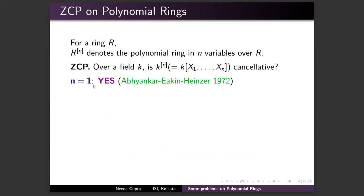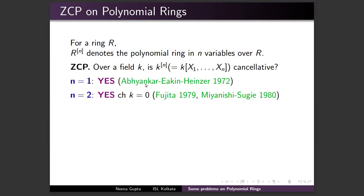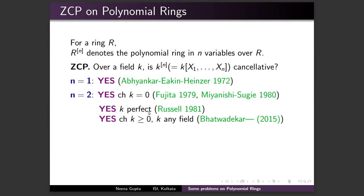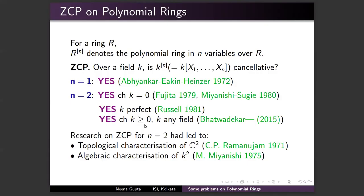This problem is known to have an affirmative answer for n = 1. For n = 2 it was a deep problem, solved by Miyanishi and Sugie with an important contribution by Fujita in characteristic zero, and later for any arbitrary field by Russell and by us together with Professor Bhatwadekar. The research for n = 2 led to beautiful results: a topological characterization of the affine plane by C.P. Ramanujam and an algebraic characterization by Miyanishi.